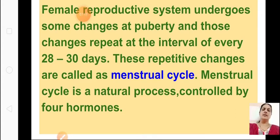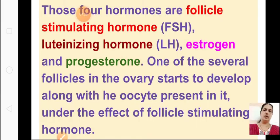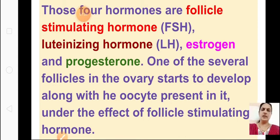This cycle is called the menstrual cycle and it is a natural process. It is controlled by 4 hormones. The 4 hormones are: follicle stimulating hormone (FSH), luteinizing hormone (LH), estrogen, and progesterone. One of the several follicles on the ovary starts to develop along with the oocyte present in it under the effect of follicle stimulating hormone.